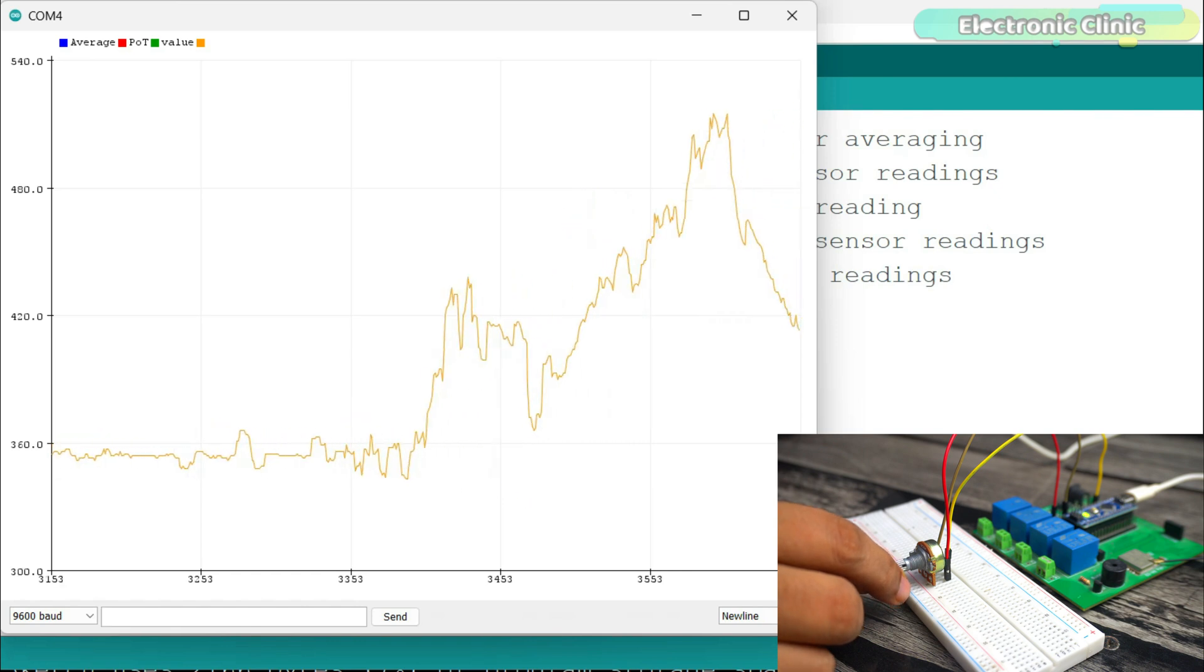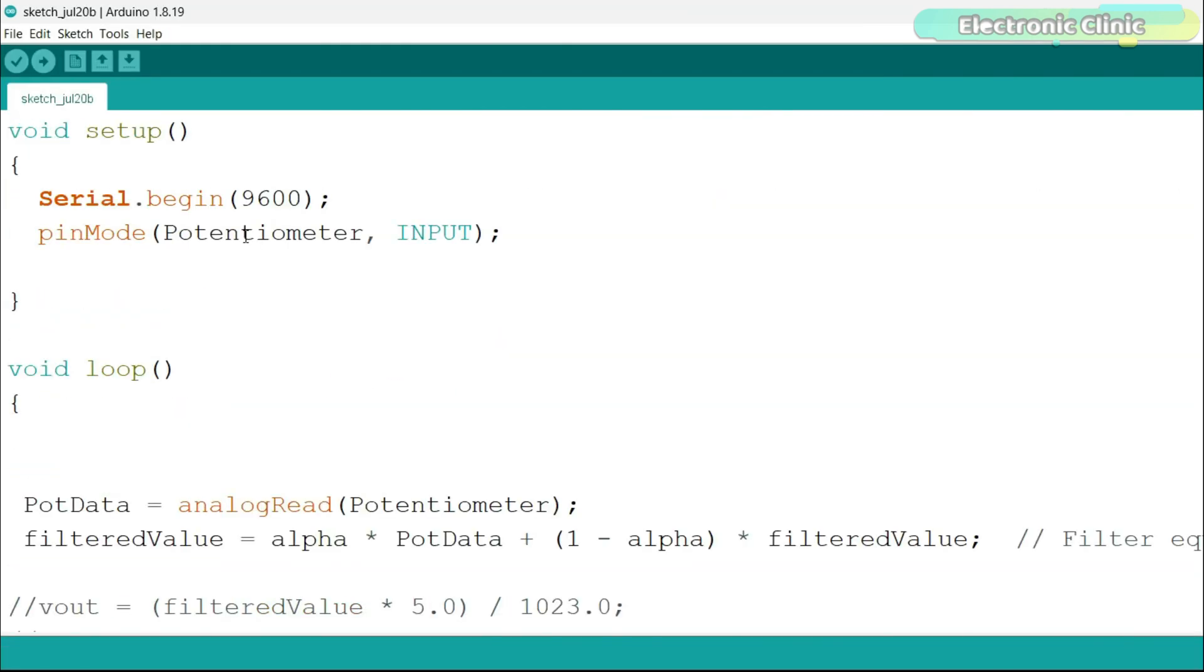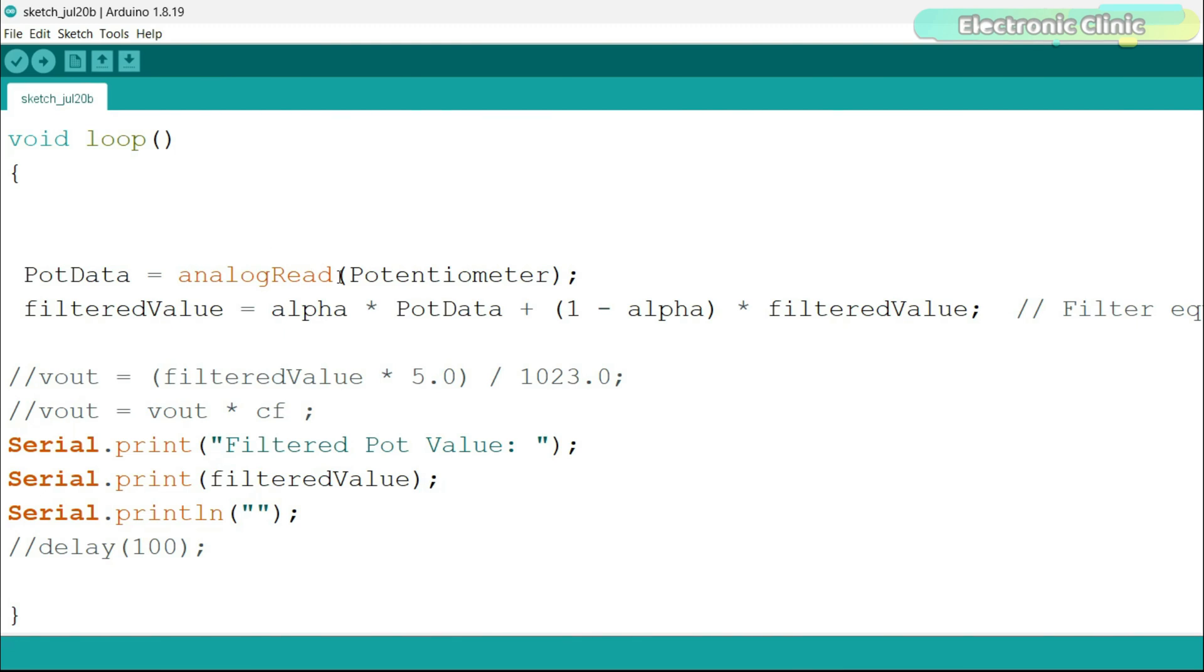Let's go ahead and implement a software filter. This code is much simpler than the previous one. This time, after reading the value from the potentiometer, we pass it through a filter equation to get filtered values.